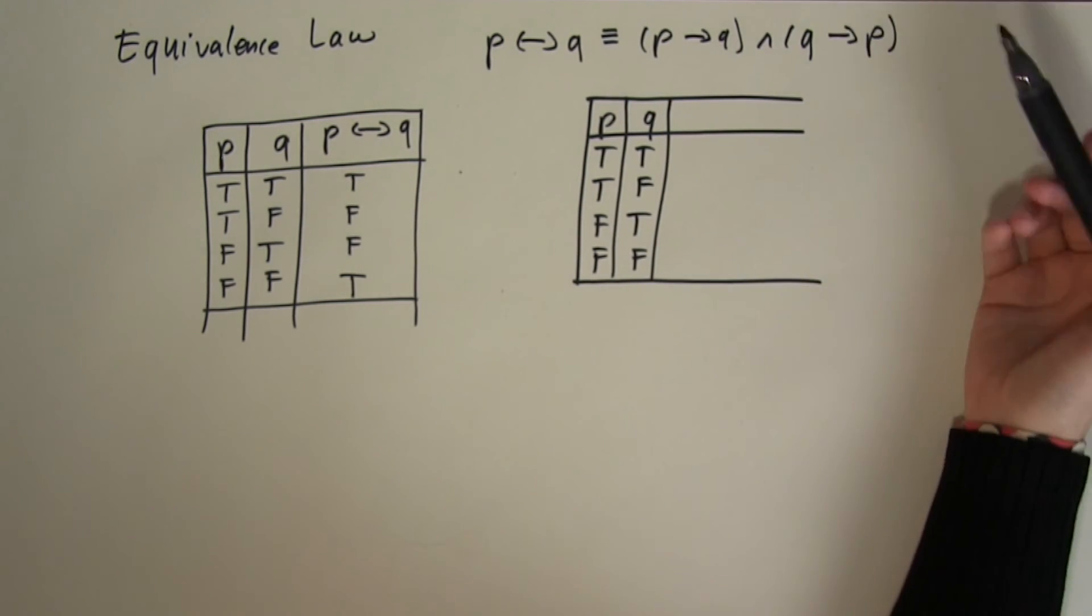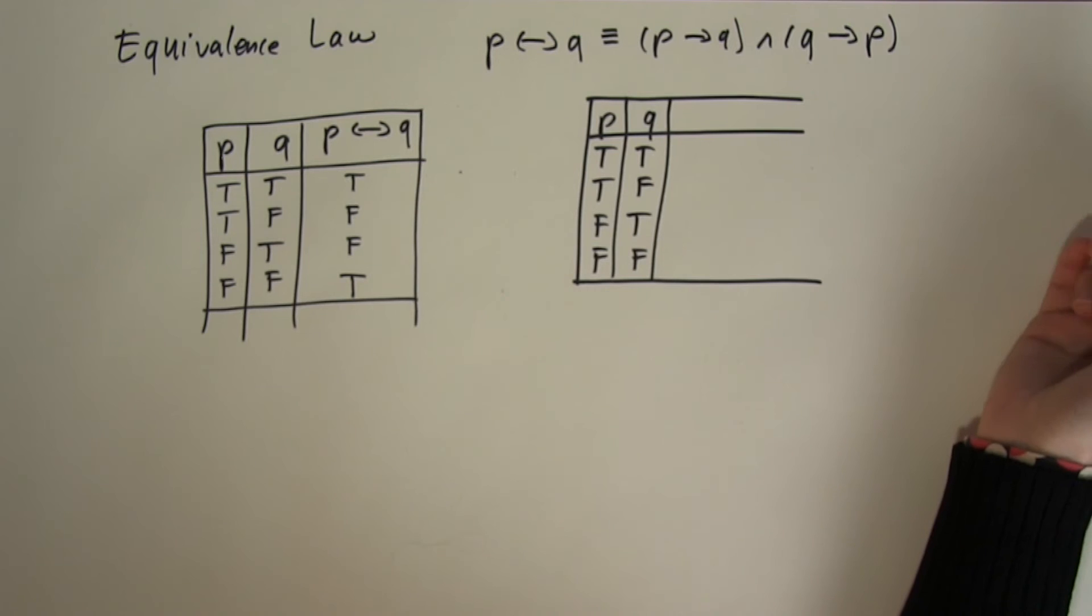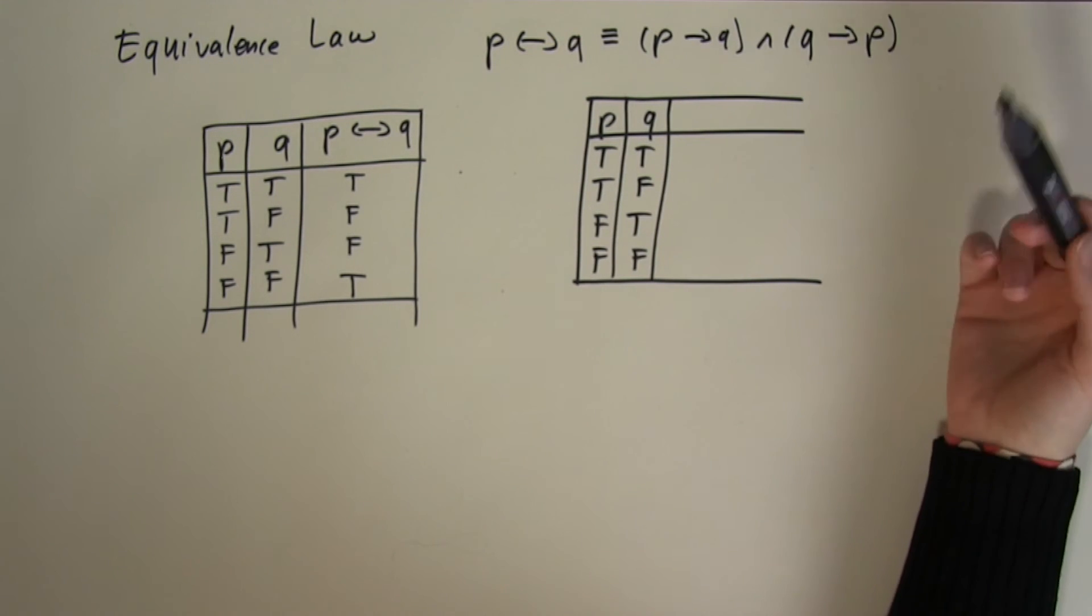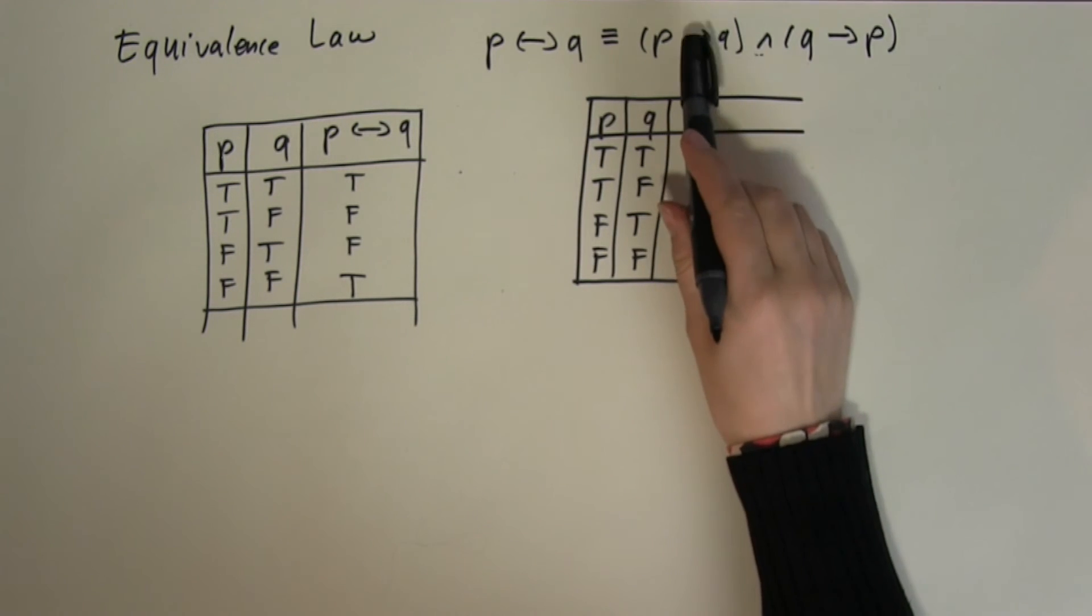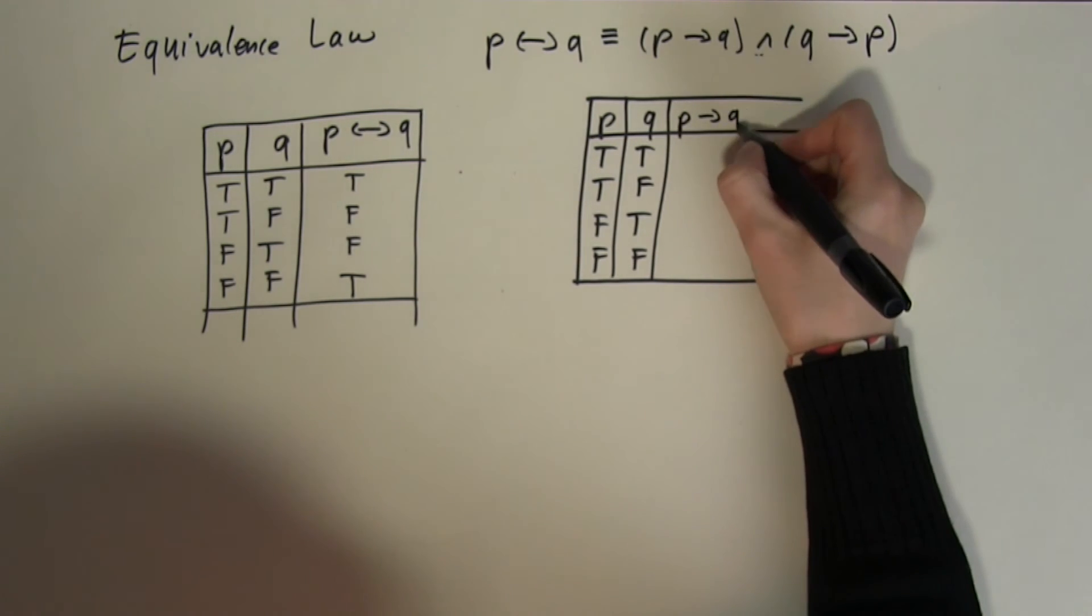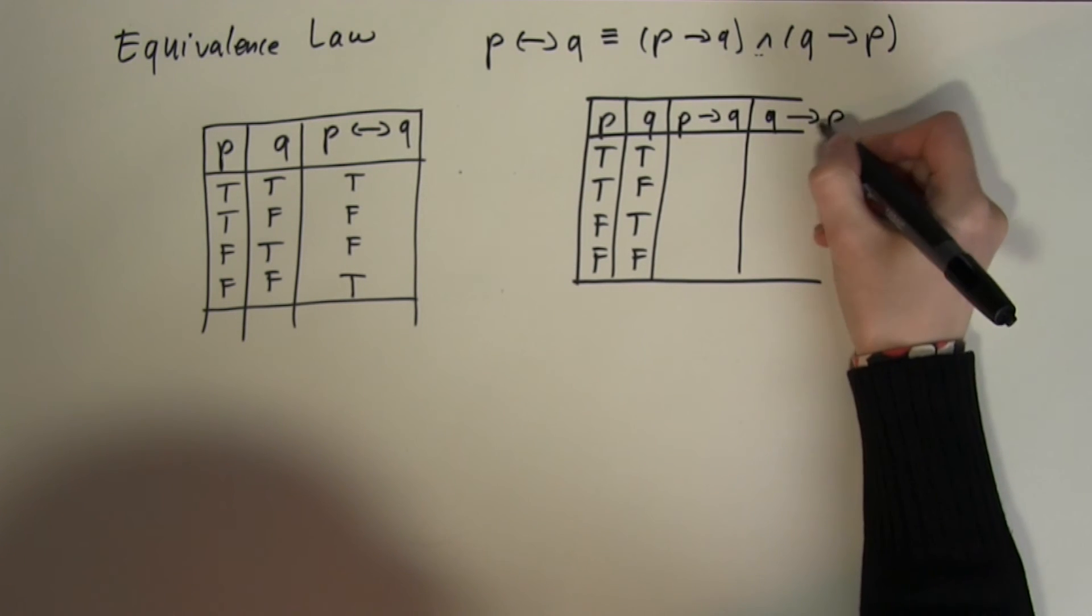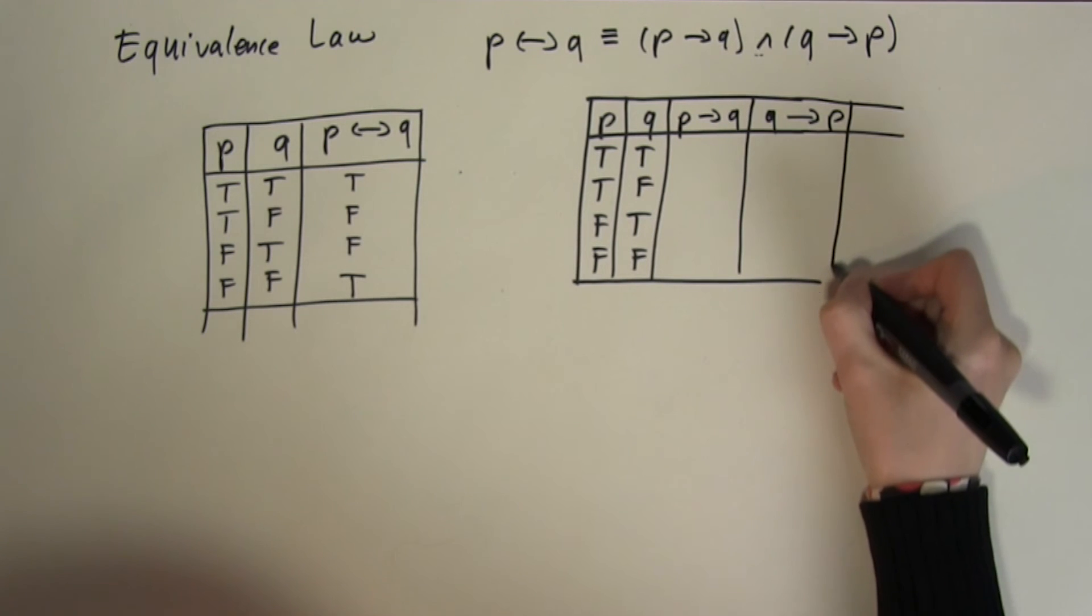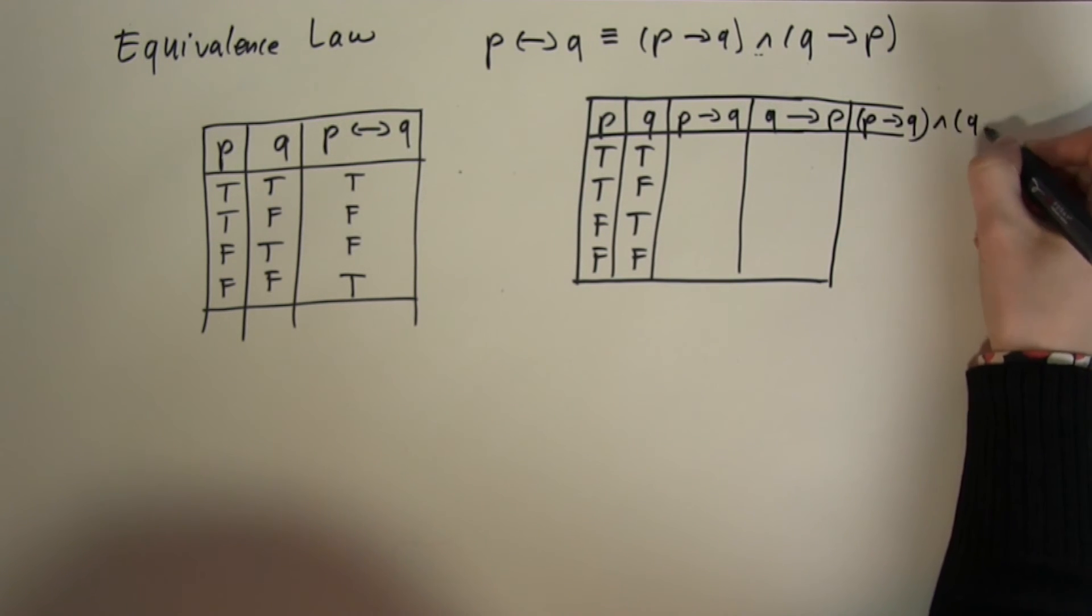Now what am I going to need to calculate first to be able to calculate the overall output value? Well there are brackets in here and brackets in logic just the same way as in algebra take priority. So before I can apply the AND operation I would need to know what the input in here is. So first I would need to calculate the P if then Q. Then I also have to calculate the Q if then P values. And once I have done that I can then apply the whole law which is going to be the final AND operation.